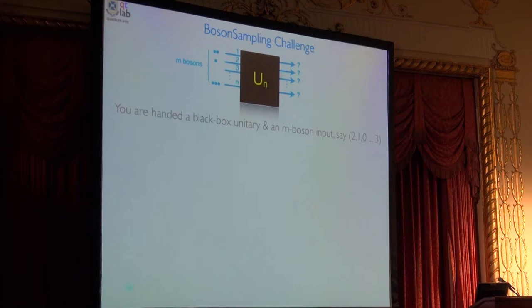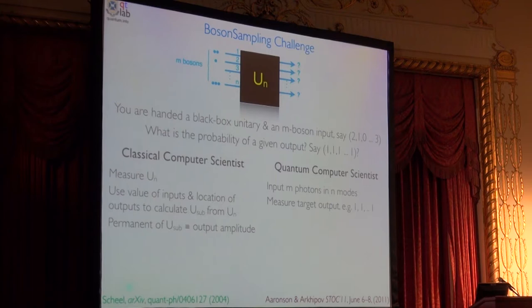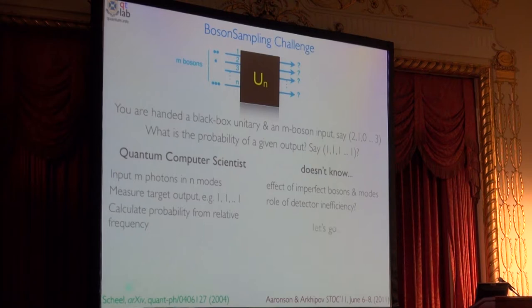So here's the challenge. I'm going to have a classical computer scientist and a quantum computer scientist. And I'm going to give them each a black-box unitary. The classical computer scientist has to measure the unitary. It's a black box. They don't know what it is. But then once they've measured it, they calculate the permanent like I talked about before. The quantum computer scientist just sends some photons through, measures how often they come out in the target mode. For example, one in each mode. Pardon me. And calculates a probability from the relative frequency. So who wins as I go to large things? Well, from everything I've said, clearly the quantum computer scientist. Yes, except we don't know in the real world what are the effects of mode mismatch and photon loss and all the other things that go wrong in experiments. So we wanted to do a small experiment and see, is this a robust protocol or not?